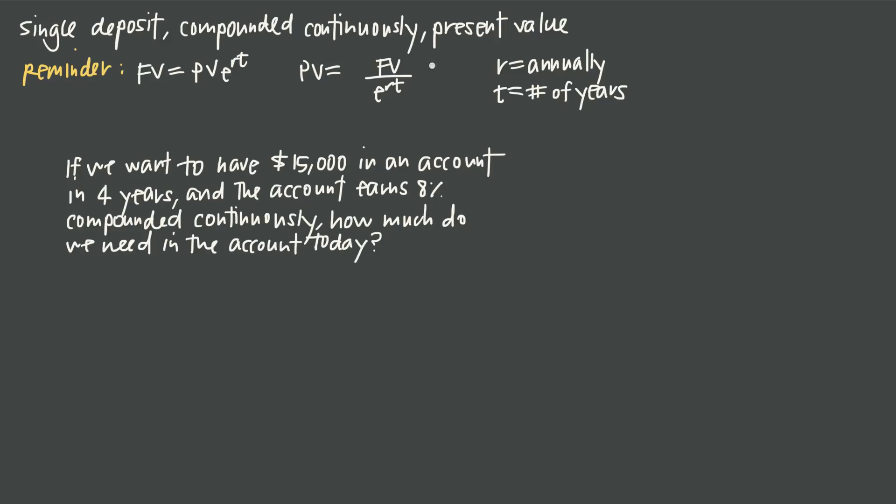Now we also have here a present value formula. Present value equals future value divided by e to the rt. Notice that this present value formula just comes directly from the future value formula. All we did was divide both sides by e to the rt to solve for PV.